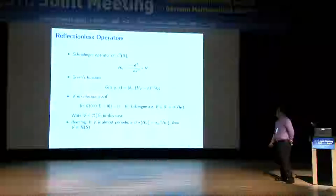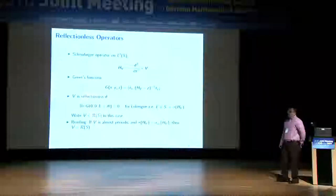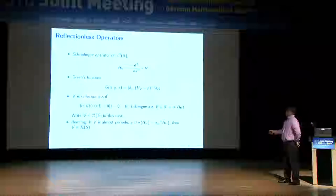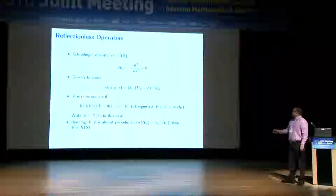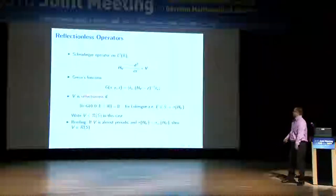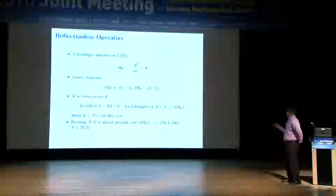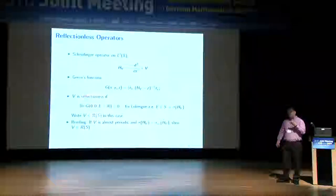With our assumptions of absolute continuity of the spectral measures and almost periodicity of the initial V, Remling showed that V lies in R(S). So if you have an almost periodic V with absolutely continuous spectrum, then V is reflectionless on S. Really what you need is that the AC spectrum equals the full spectrum — you don't need purely AC spectrum, but that's a technicality.